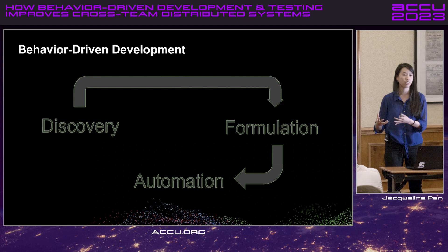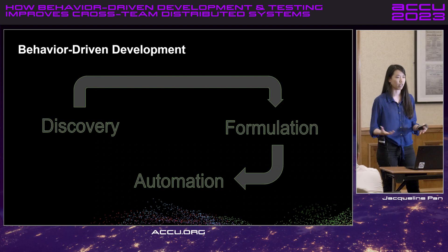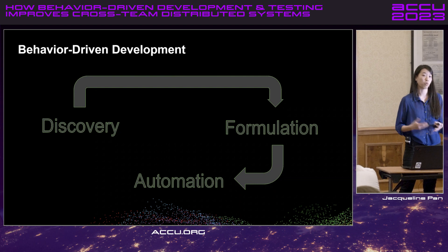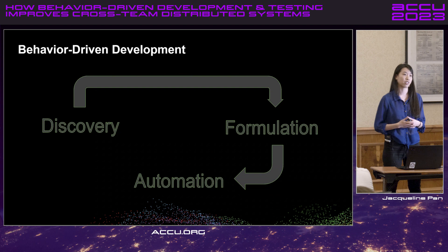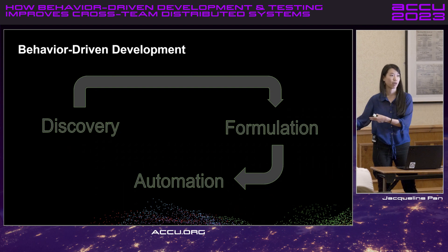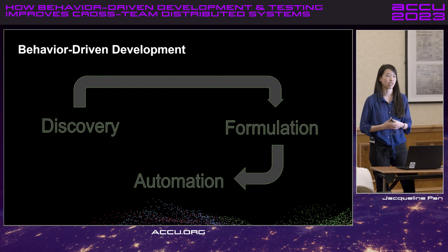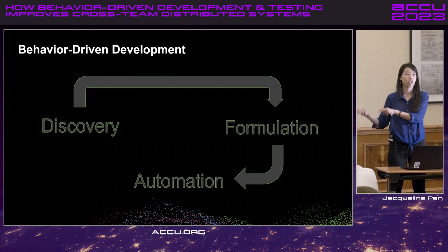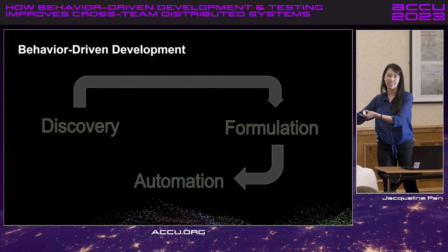The third part is automation. Automation is when you take those scenarios, those behaviors, those expectations, and feed them into a testing framework so you can validate that your software is doing what you expect. An important aspect is not just validating your software does what you expect, but also validating it over a period of time. That's why we automate these things — so that as we make code changes, the behaviors that we agreed upon for past features are still happening in our system today.